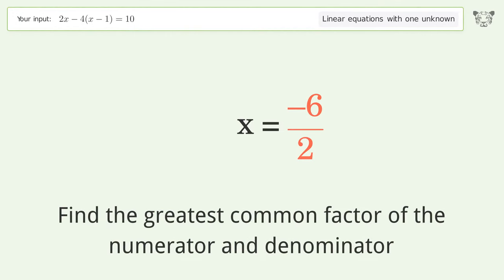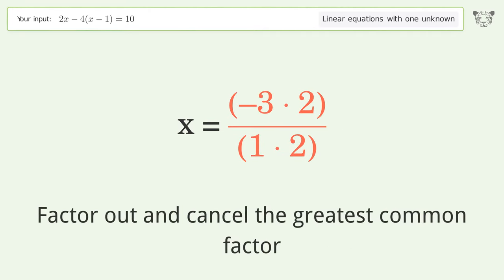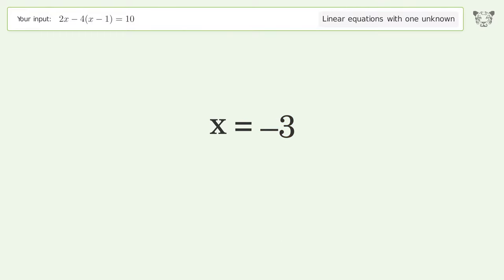Find the greatest common factor of the numerator and denominator. Factor out and cancel the greatest common factor. And so the final result is x equals negative 3.